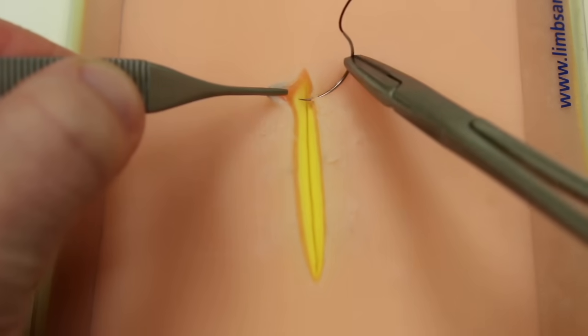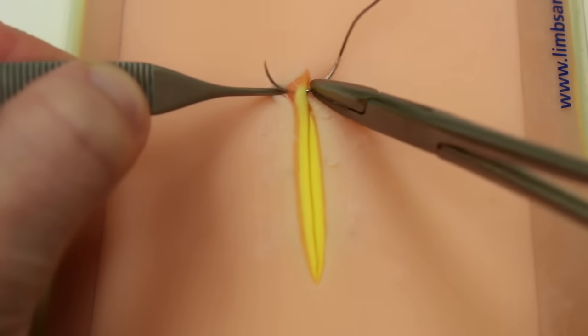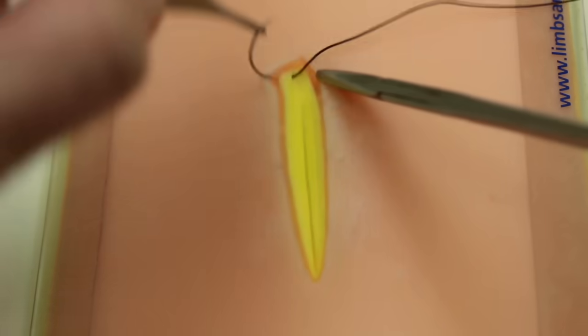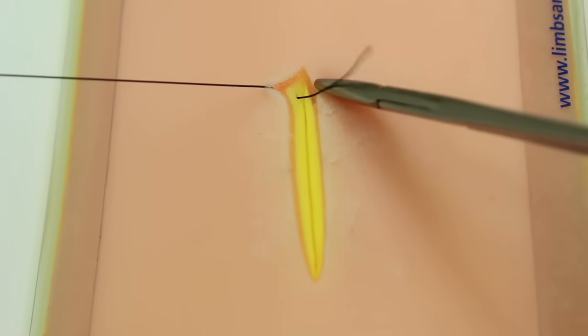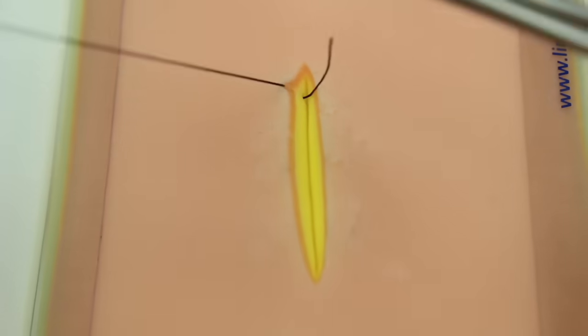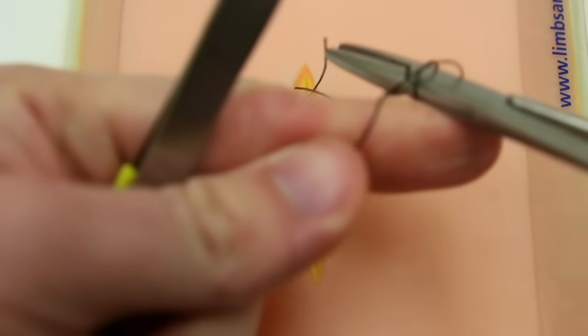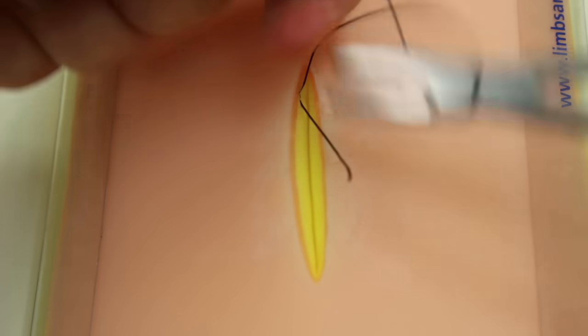Your first move is just to grab some of that dermis for an anchoring stitch. Just grab something deep up near the top of the incision and go ahead and tie that down.